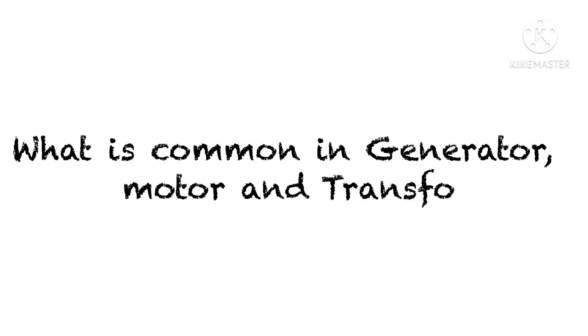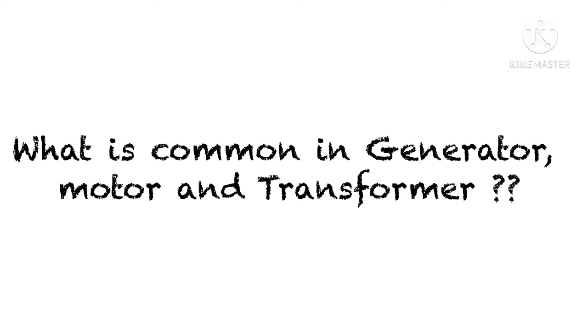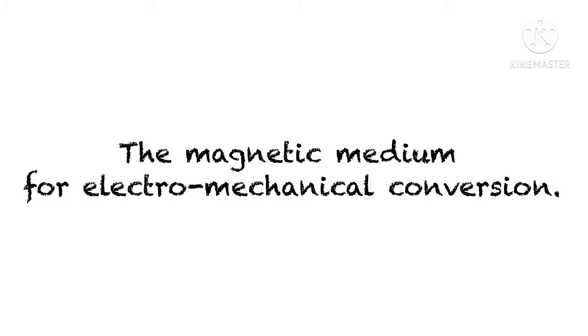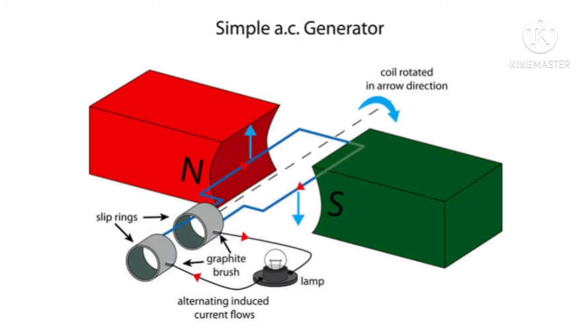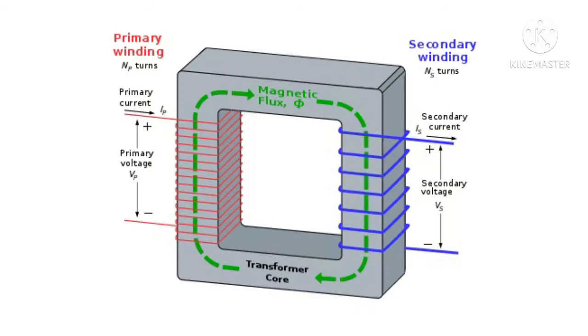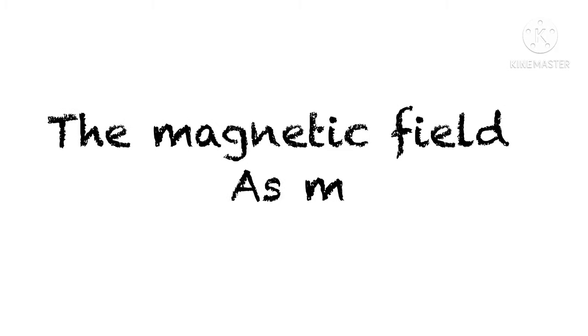What is the common point of a generator, motor, and transformer? All are electrical machines. And what is the second thing? Yes, the magnetic medium for conversion. In all these machines the input is different, the output is different, but one thing is common: the magnetic medium which is used for the conversion or the transfer of energy from one side to the other side, from input to the output. Let us see how.